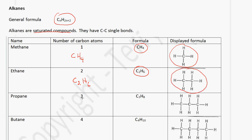Propane has 3 carbon atoms, so the formula will be C3H. We use the formula, it will be 2 multiplied by 3 which is 6 plus 2 which gives us 8, so that's how we got C3H8.